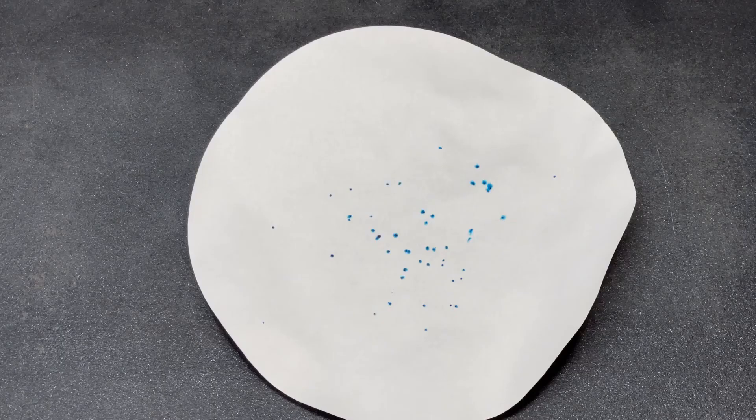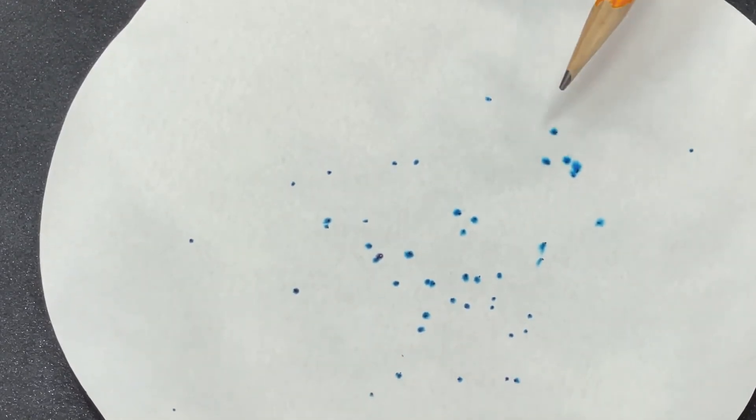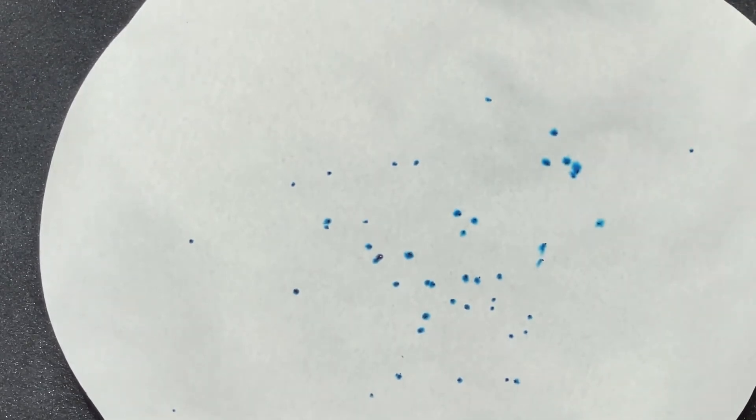Identifiable colored spots should be present, one for each Microtracer particle. Count the colored spots by hand using a pen or pencil to mark each spot, or by using the Microtracer automated spot counting app.